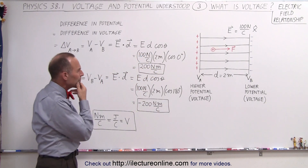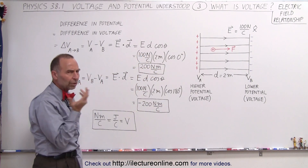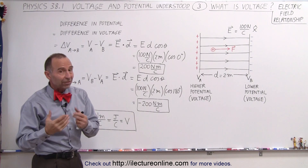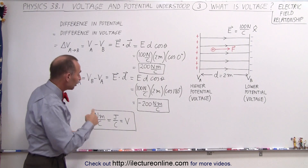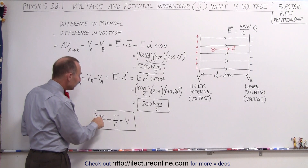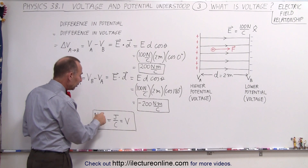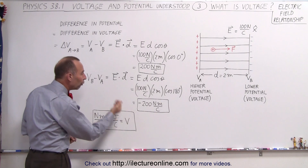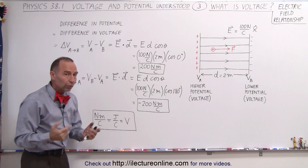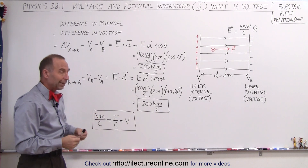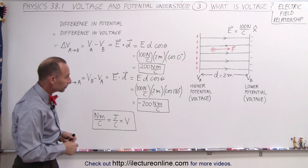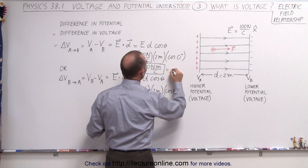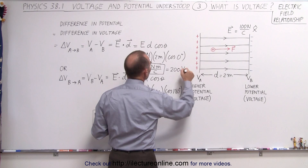Now, you might ask: wait, newton meters per coulomb — didn't you say the unit for voltage is volts? The answer is yes, but a newton meter is the same as a joule, and a joule per coulomb is defined as volts. So it turns out newton meters per coulomb is indeed volts.